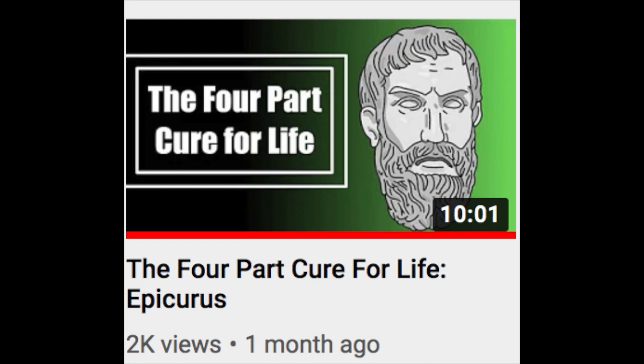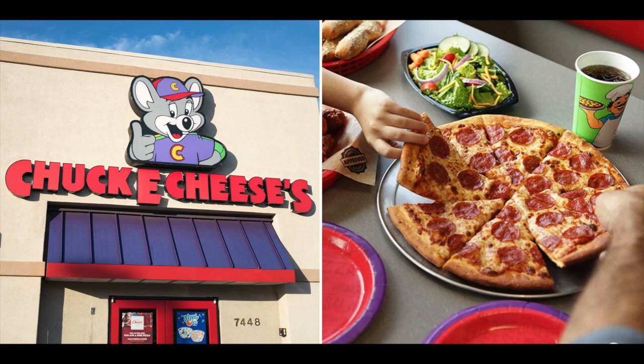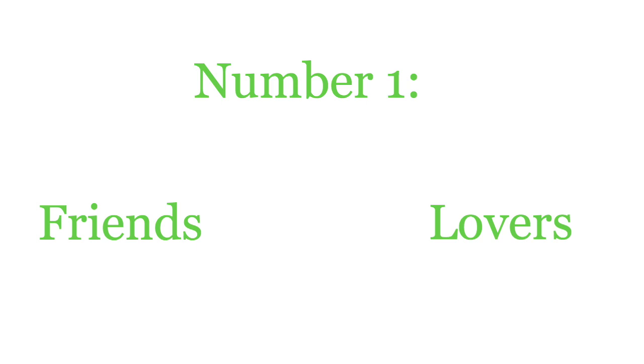I'd also recommend checking out my other Epicurean video where we talk about the four-part cure for life. And rest assured, the four ideas we're going to be talking about here are different. This ain't some repackaged, reused Chuck E. Cheese pizza. These are new ideas. So let's kick this list off with number one, value your friends over your lovers.